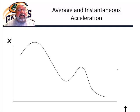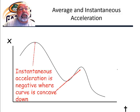Here's a funny-looking position versus time graph, and we're going to see what we can figure out about acceleration from this position graph. First off, if you see the curve down, the concave down, that's going to tell you that the acceleration is negative.